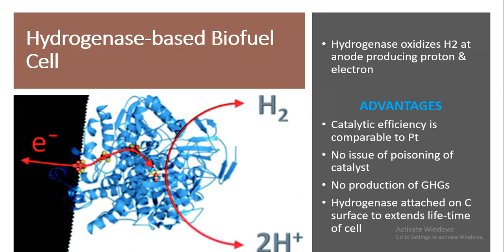Hydrogenase-based biofuel cells are among the most important. In this type, hydrogenase oxidizes hydrogen at the anode, producing protons and electrons; electrons then move through the external circuit. Advantages include catalytic efficiency comparable to platinum, no catalyst poisoning, no production of greenhouse gases, and hydrogenases can be attached to a carbon surface.